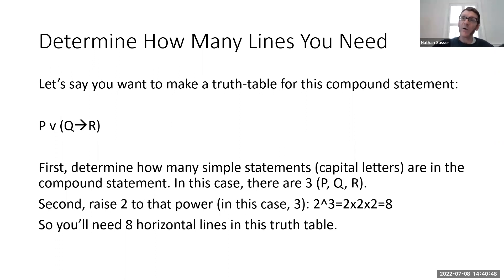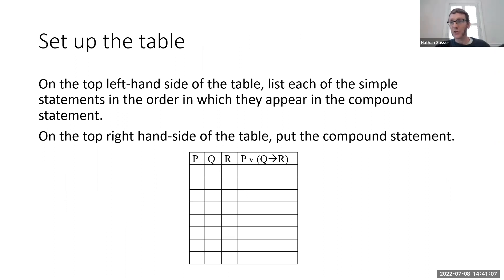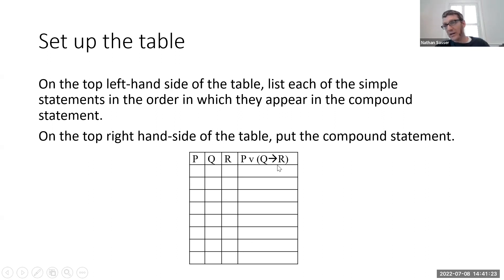On the top left-hand side of your table, you're going to list each of the simple statements in the order in which they appear in the compound statement. On the right-hand side, you're going to put the whole compound statement itself. So we've got our eight rows, and on the left-hand side I've got each of the simple statements — P, Q, and R — and on the right-hand side I've got the whole compound statement. That's how you set it up.